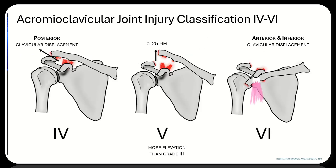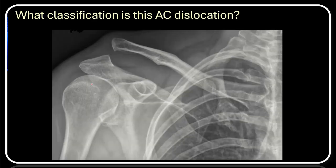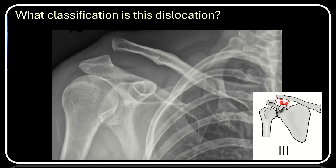Grades 4, 5, and 6 are all variations of a Rockwood 3, with complete disruption of the coracoclavicular ligament as well as complete rupture of the acromioclavicular ligament. In Rockwood 4, the clavicle has completely broken away from the acromion and is extended posteriorly. In Rockwood 5, it is the same as a 3, but the distance from the inferior border is much more than 25 millimeters. Rockwood 6 is anterior and inferior displacement of the clavicle. The example image shown here is a grade 3.